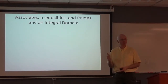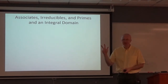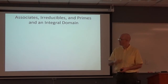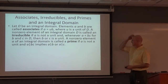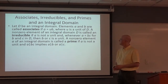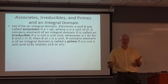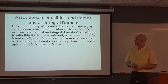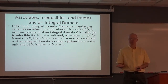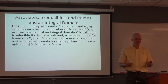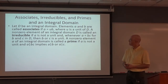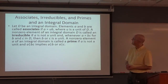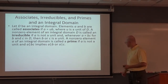Integral domains are commutative rings with unity in which there are no zero divisors. So we are talking about integral domains in the background. D is an integral domain. Elements A and B are called associates if you can write one as a product of a unit times the other. Units are the generalization of essentially plus or minus one in Z. In the integers, plus or minus one are the only units — the only things with multiplicative inverses.